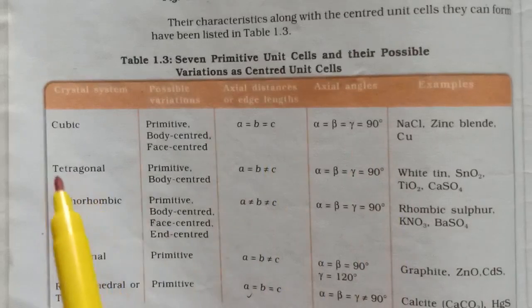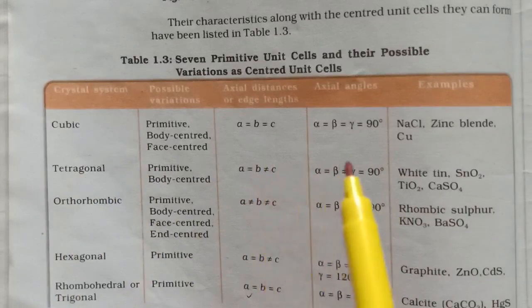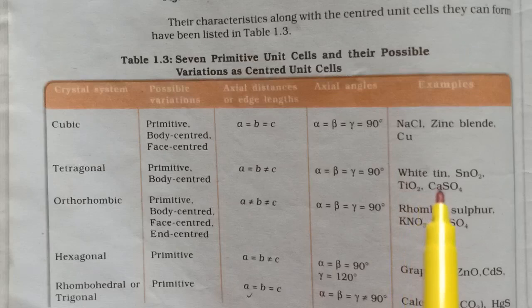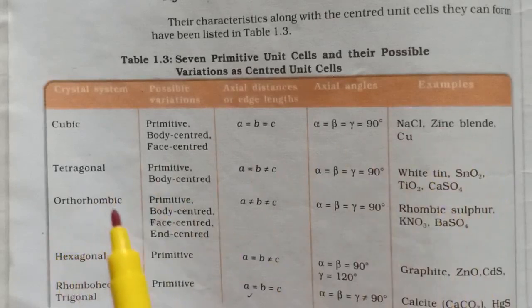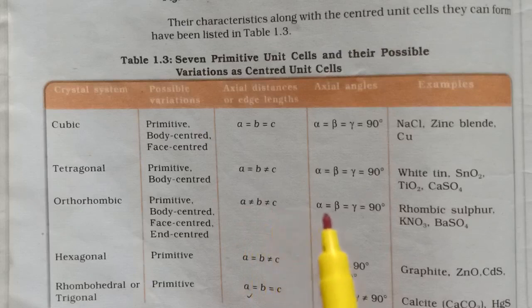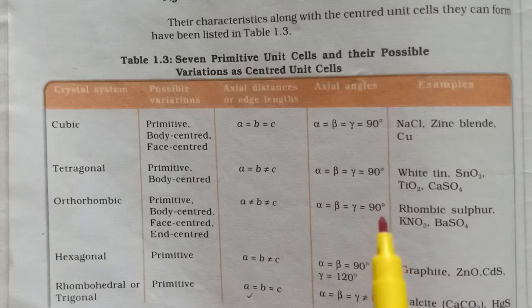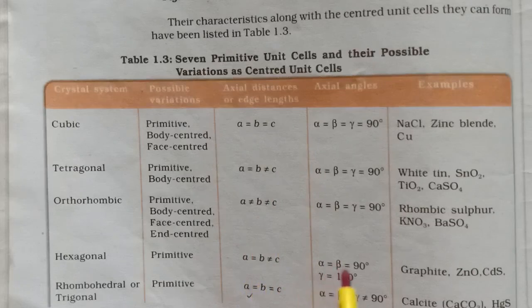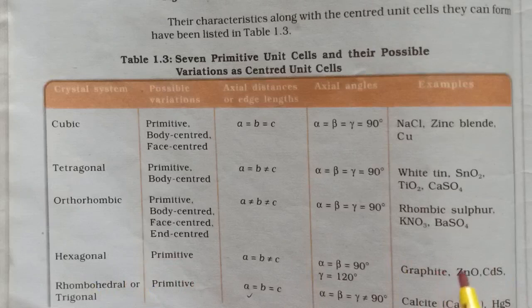In orthorhombic: A ≠ B ≠ C and alpha = beta = gamma = 90°. In hexagonal: A = B ≠ C, alpha = beta = 90°, and gamma = 120°. Examples include graphite, zinc oxide, and cadmium sulfide. In rhombohedral or trigonal: A = B = C and alpha = beta = gamma ≠ 90°. The example is calcite, CaCO₃.